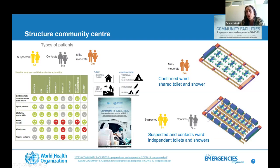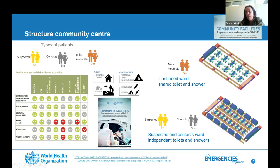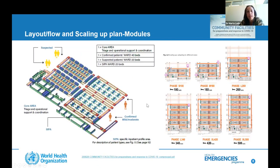WHO recommends these community shelters mainly for suspected cases or contacts needing quarantine isolation until tested, and for mild to moderate cases. We discourage admitting severe or critical patients in these facilities. The layout differs: for suspected cases and contacts, individual rooms with individual toilets are ideal to prevent cross-contamination, while for confirmed mild and moderate cases, they can share toilets and showers in common rooms — allowing a modular structure that can grow exponentially.